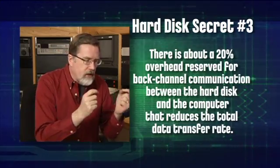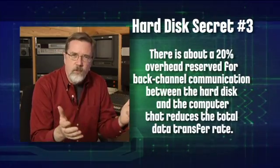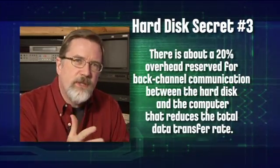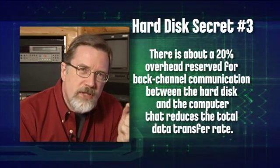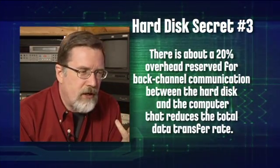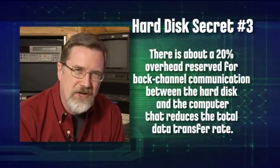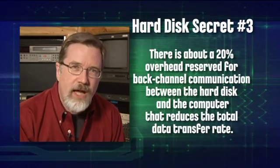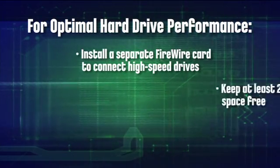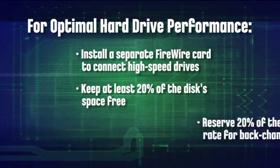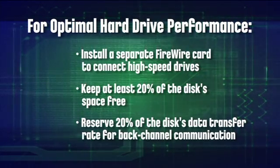There's another secret: FireWire speed changes depending on what devices are plugged in; the fuller a hard disk gets, the slower it goes; and there's always an overhead between the computer and the hard disk — back-channel communication that happens about 20% of the time. This means that if a FireWire 400 drive moves data at 24 megabytes a second, 20% of that — about 5 megabytes a second — is the computer and hard disk communicating rather than moving your data. So you must reserve 20% of the data transfer rate for that overhead, on top of keeping 20% free space on the drive.